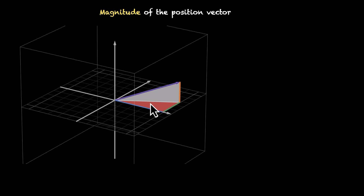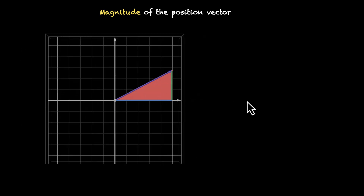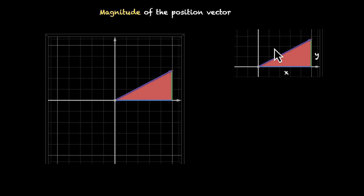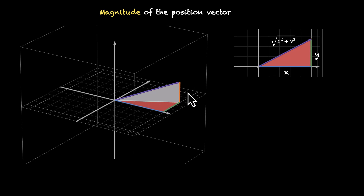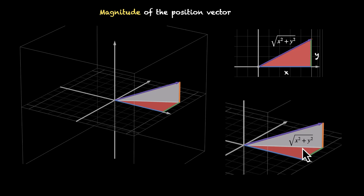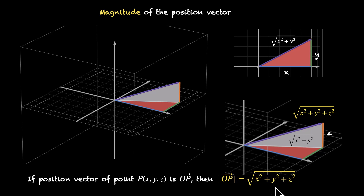If we were in 2D, we would deal with only one right angle triangle, but because we're in 3D, we deal with two right angle triangles — first the red one, and then the white one. We use the blue and green lengths to find the hypotenuse of the red triangle, and then that hypotenuse becomes the base of the white triangle, and we find the hypotenuse of the white triangle — that gives us the magnitude. Using Pythagoras on the red triangle, x and y give us √(x²+y²). Then using that as the base of the white triangle with height z, the magnitude is √(x²+y²+z²).